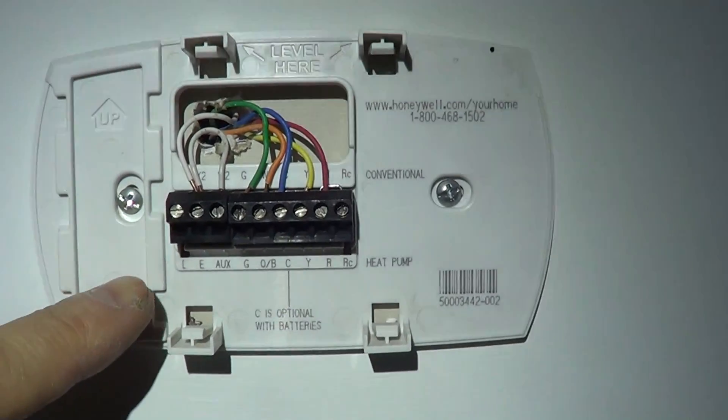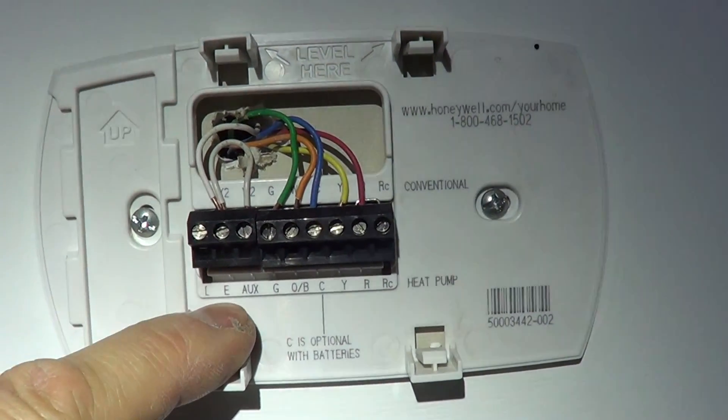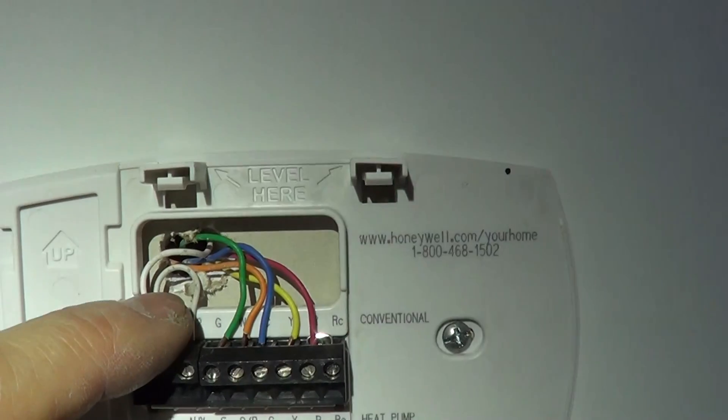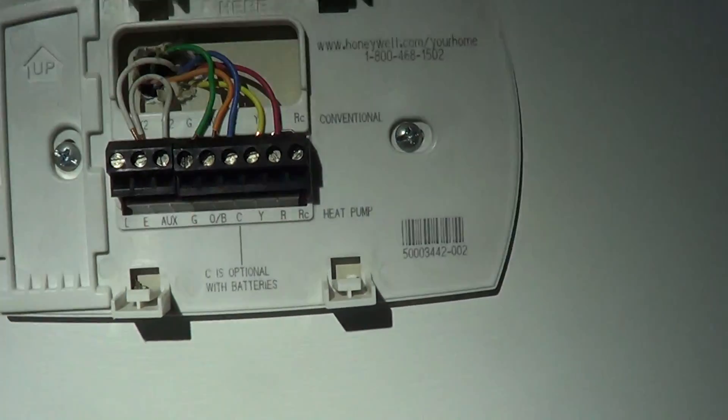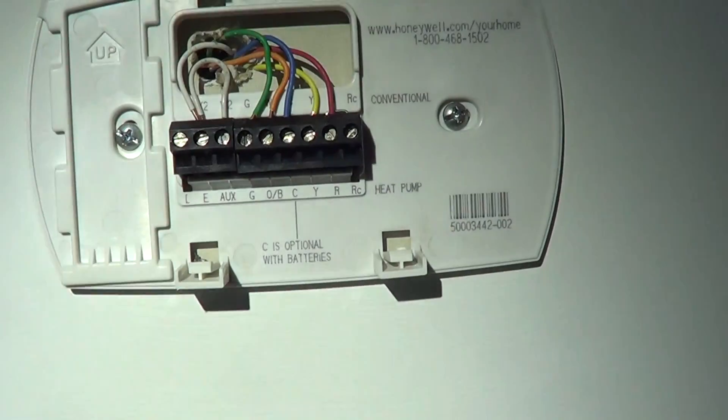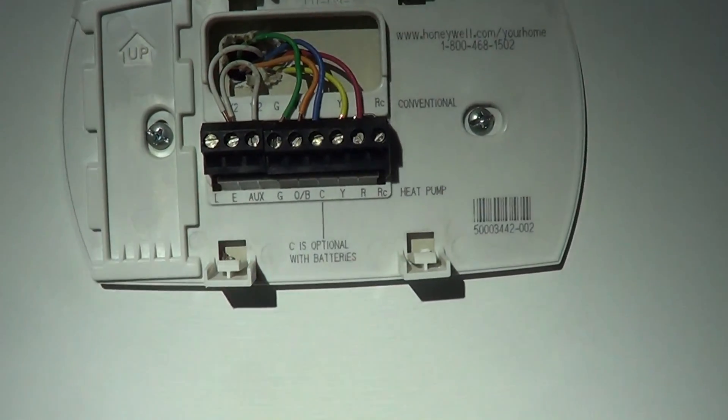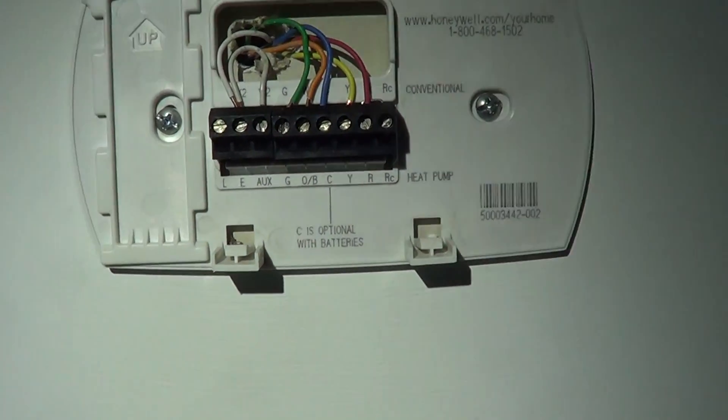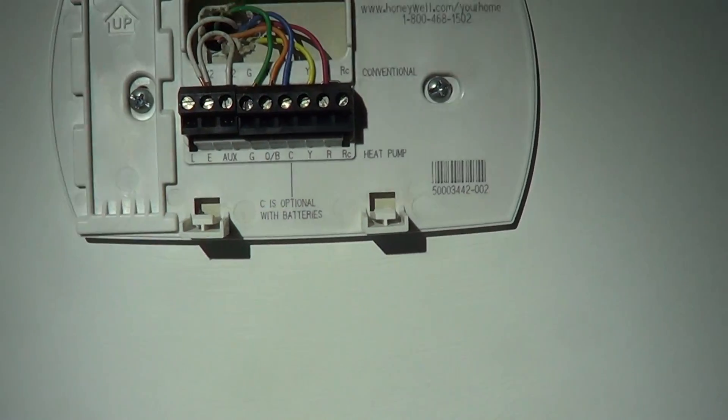On the thermostat here, make sure we got the AUX and the E for emergency heat. They're jumpered together. Some of these thermostats, you have to do that. So it's going to be stage two heat, which would be auxiliary. That's going to turn on the propane. Or the emergency heat will turn on the propane. And either way, it's going to lock out the heat pump and run propane. Once it's satisfied, it goes right back to heat pump.